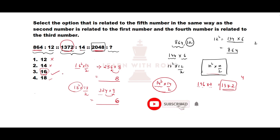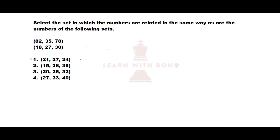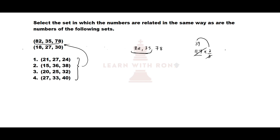Let's see the next question. We need to find a set from the given options which follows the same pattern as the two given sets. Check the first set: 80, 35, and 78. If I add the first two numbers, 80 plus 35 gives 115... wait, 5 plus 2 is 7 and 8 plus 3 is 11, so 117. If I multiply 117 by 2/3, I get 78, which is the third number.